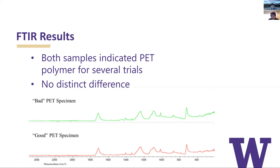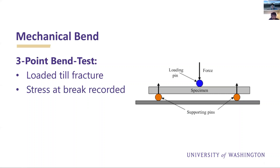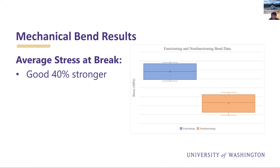Now Jason will talk about our mechanical tests. The first mechanical test was a three-point bend test, conducted by placing a flat rectangular specimen on two supporting points and bending it with a third loading point. The load point increases and records pressure until the sample fractures, and the stress at break is recorded to measure overall strength. The good samples had a significantly higher average breaking stress, with a mean that exceeded the bad by 40 percent, confirmed at the 99 percent confidence level.